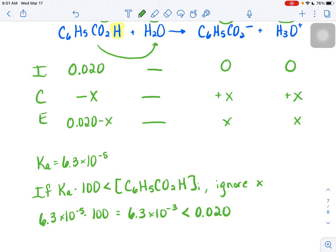So what that means is we get to ignore x. In other words, we get to approximate this to just say it's about 0.020. X is going to be so small that it's not sig fig wise going to impact this number that much.